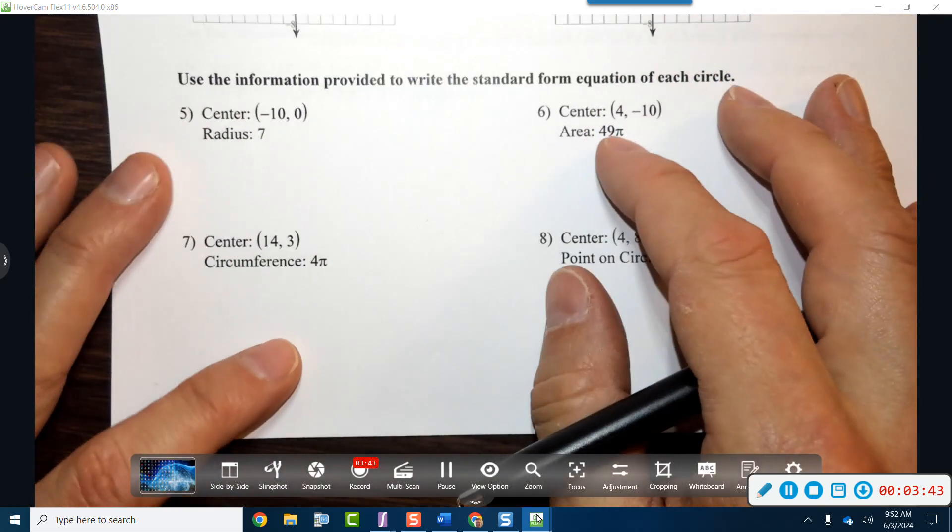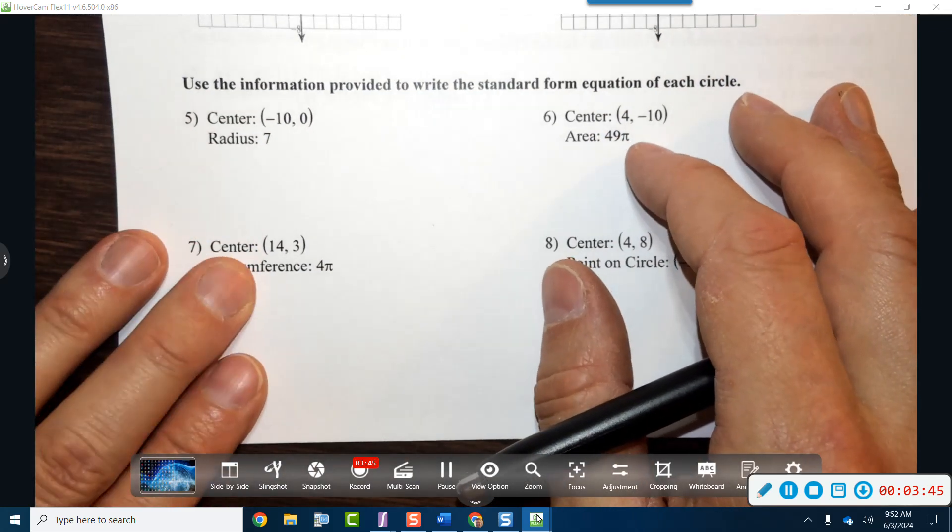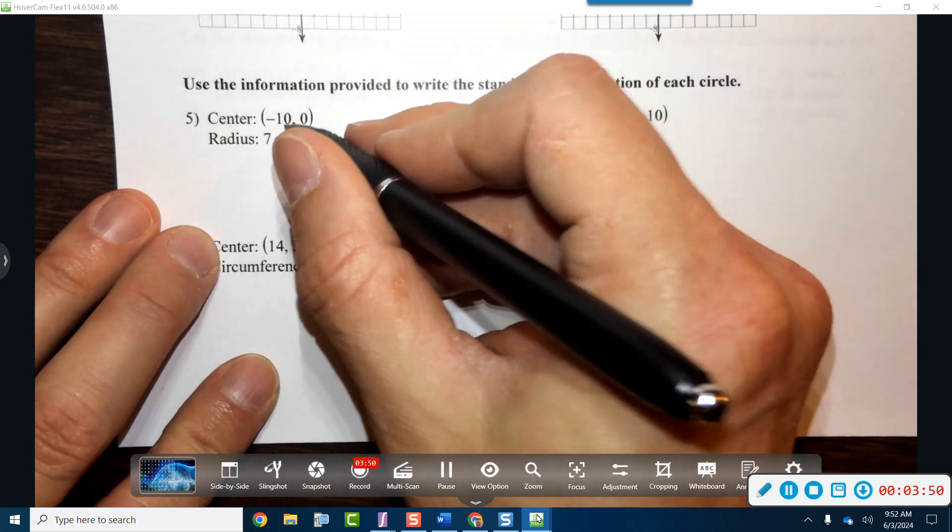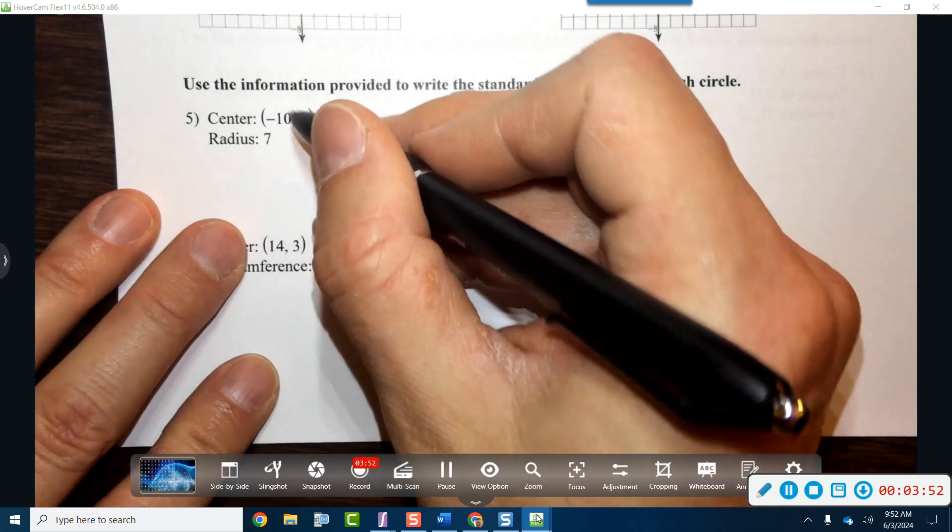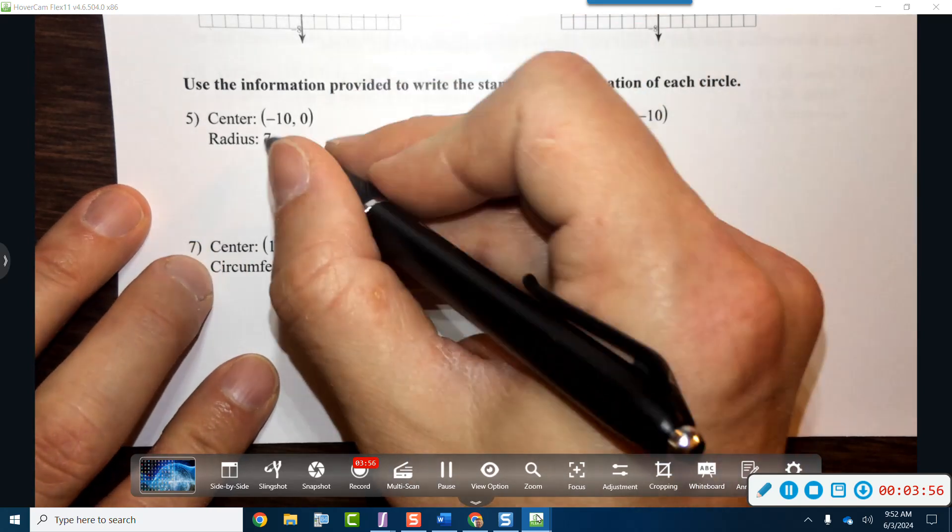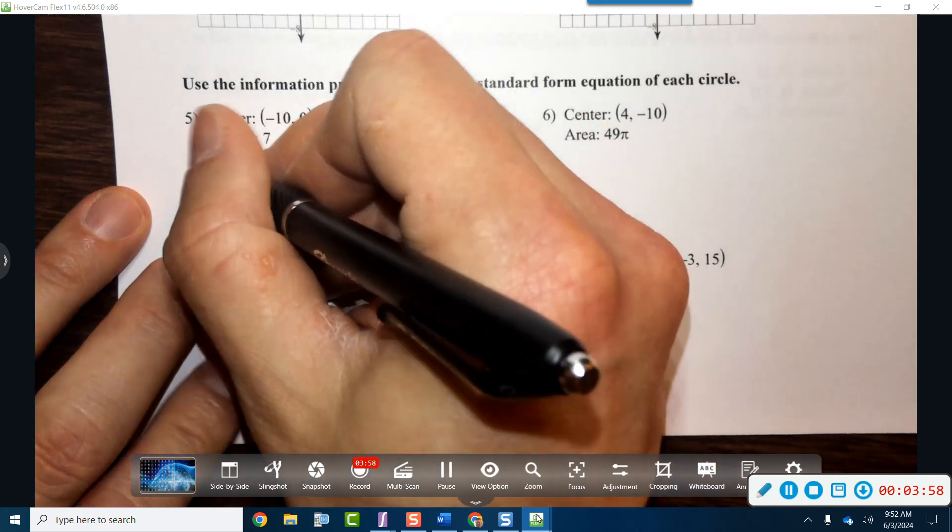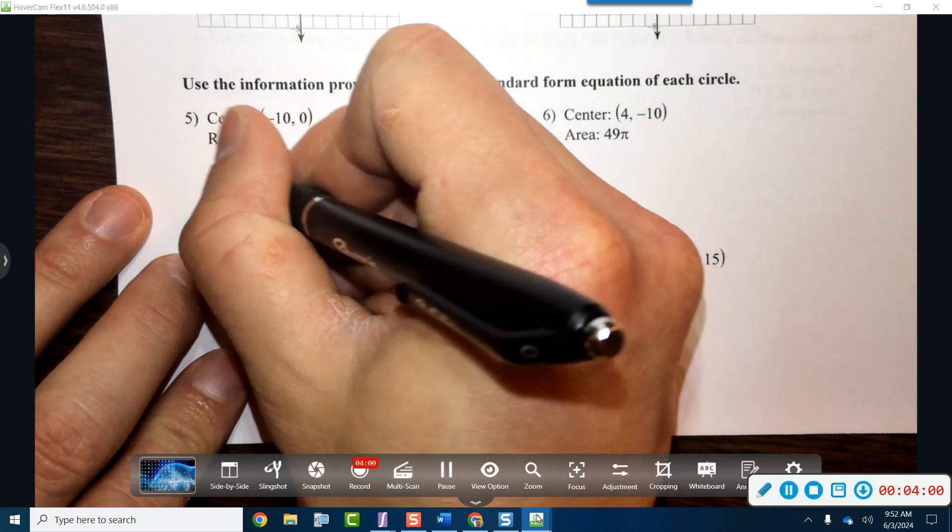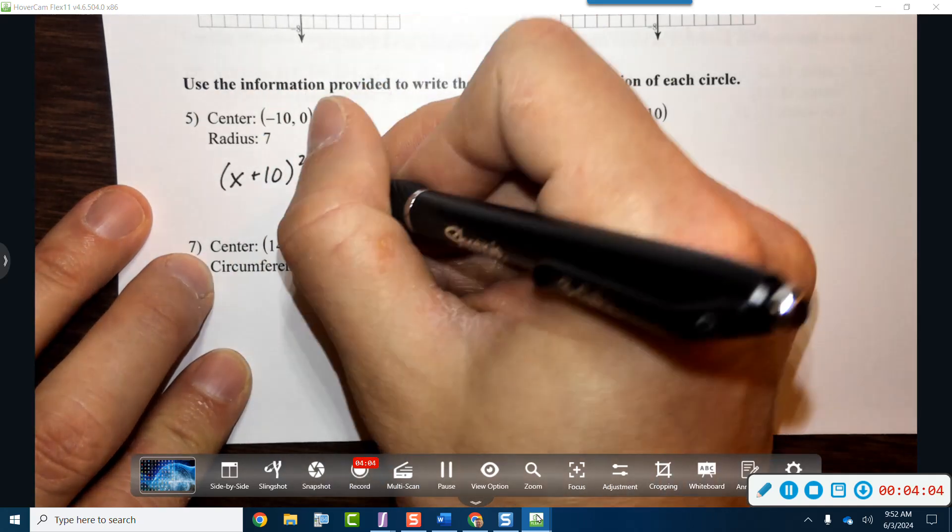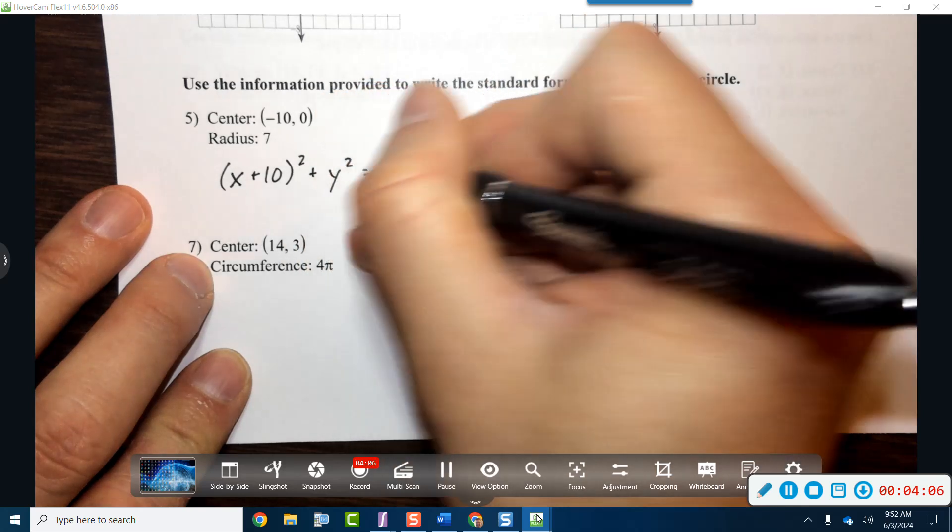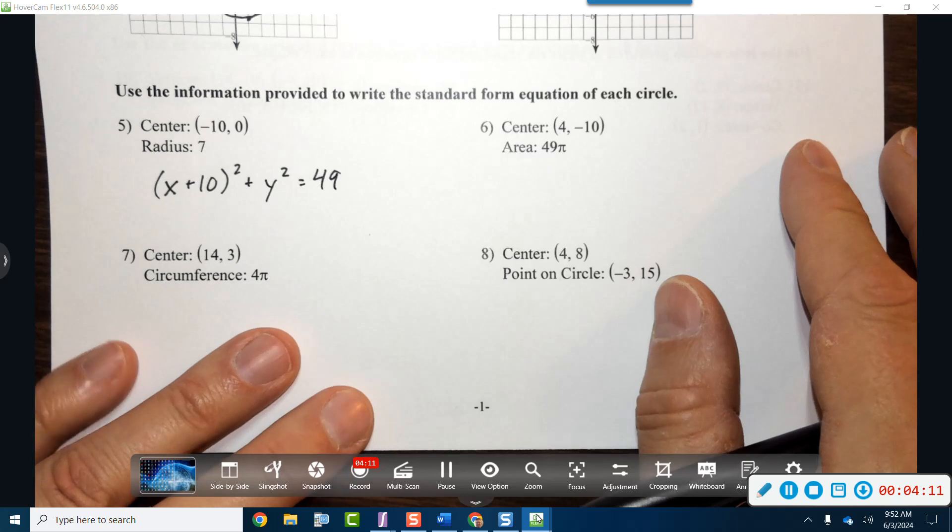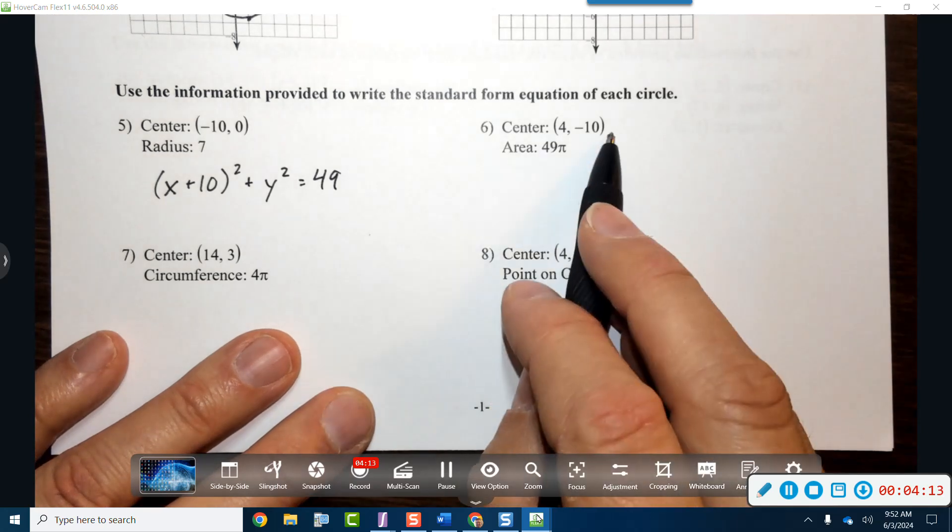So with that, then now let's go ahead and write the standard form. Here we have an x coordinate of negative 10, center of y coordinate 0, so there won't be any parentheses on the y coordinate, but we do have a radius of 7. So the way that this would look is that we've got x plus 10 quantity squared plus y squared will equal 7 squared which is 49. That's just a quick write.